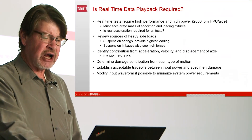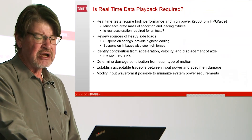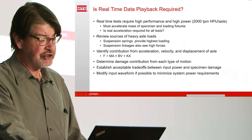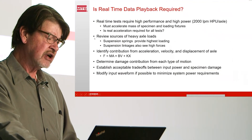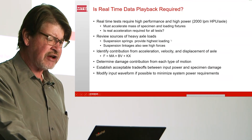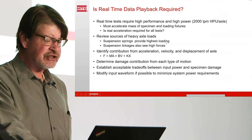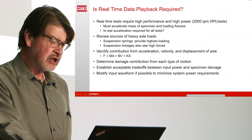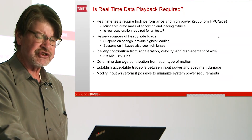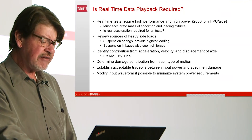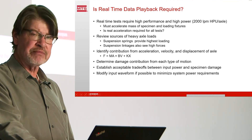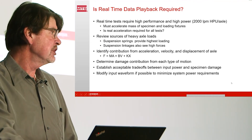Real-time tests require high power and high performance — for example, about 2,000 liters per minute of HPU per heavy truck axle to simulate rough road events. The system must accelerate the mass of the specimen and loading fixtures. A key question is whether real acceleration is required for all tests. We need to review sources of heavy axle loads and identify what role suspension springs, dampers, and other inputs play, then determine the damage contribution from acceleration, velocity, and displacement to find acceptable trade-offs between input power and specimen damage.